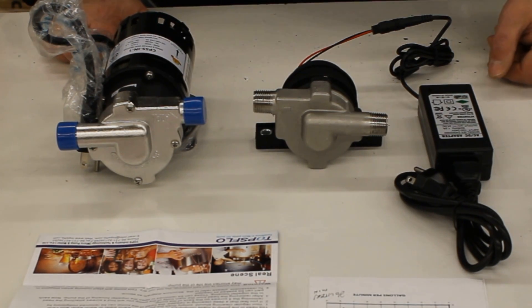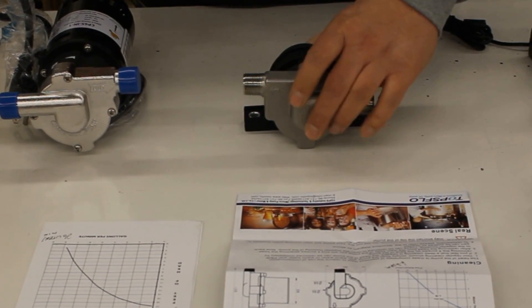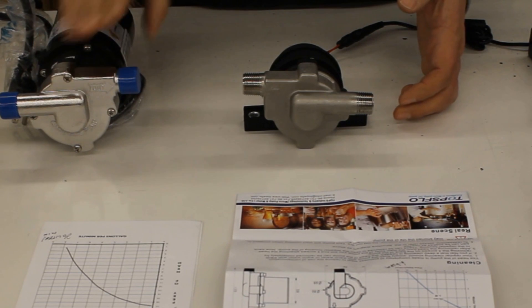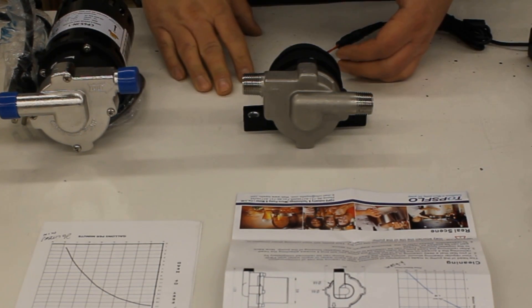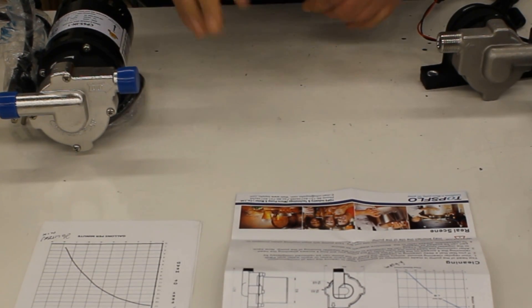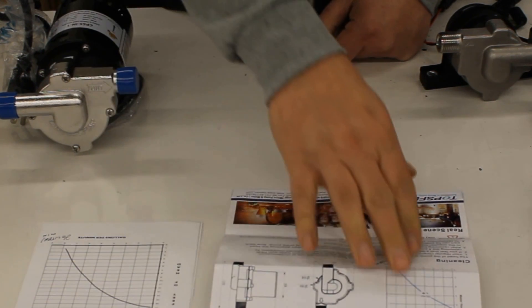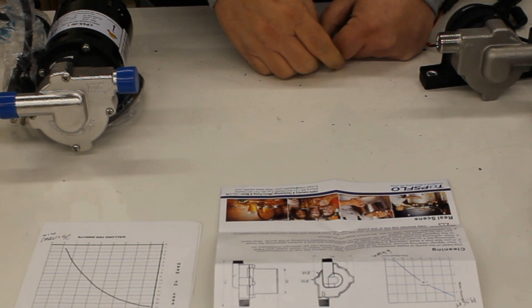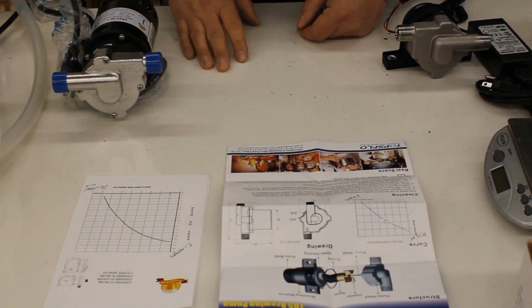Performance-wise, you might look at these two pumps and think there's no way that this pump is going to perform anywhere near like the Chugger because the motor's bigger. The manufacturer's specs are very similar. The Chugger claims that it'll push up to 17 feet of head pressure, and the TopsFlo is more like almost 15 feet. So the Chugger supposedly will push two feet additional height. We're going to test it at two different heights and measure the flow rate.